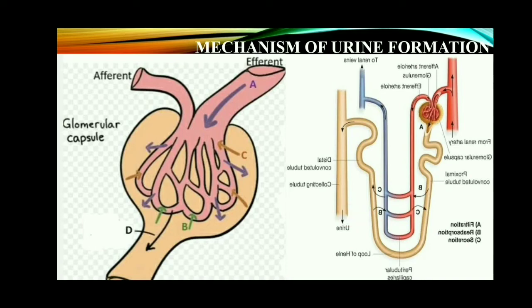Hypertonic means concentrated urine — the extra water present in the urine is removed, and only concentrated urine remains. Finally, the urine passes into the collecting duct, which opens into the renal pelvis. Through the ureter, it enters the urinary bladder. When the urinary bladder is filled with urine, it is expelled out through the urethra. This process is called micturition. A healthy person excretes 1 to 2 liters of urine per day.